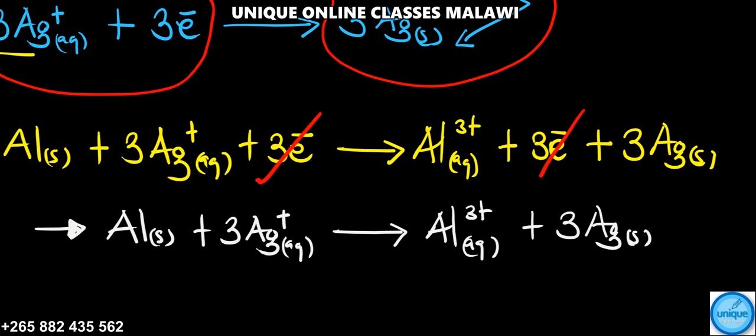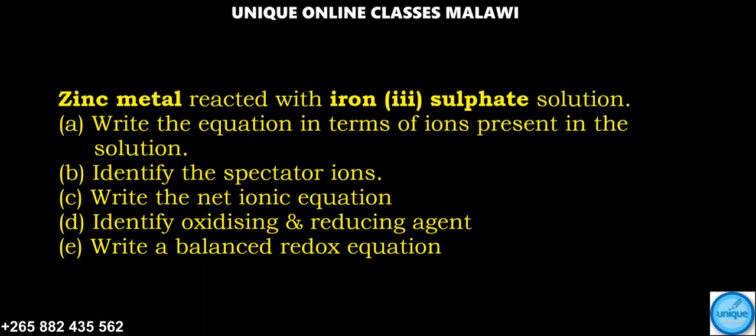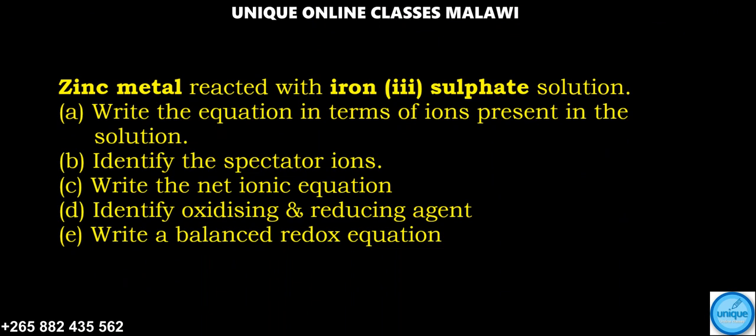Let's finish with this question. Zinc metal reacted with iron(III) sulfate solution. We should write the equation in terms of ions present in the solution, identify spectator ions, write the net ionic equation, identify oxidizing and reducing agents, and finally balance the redox equation.